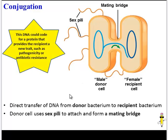That genetic information could be a gene for antibiotic resistance or a gene that makes the bacteria pathogenic. And that concludes our exploration of how bacteria transmit genetic information.